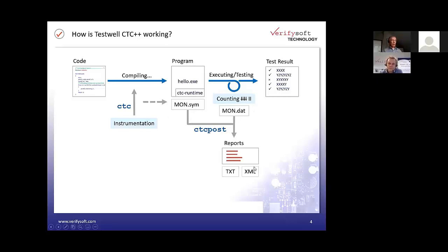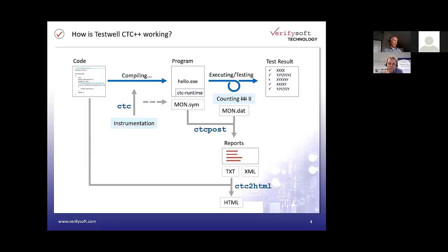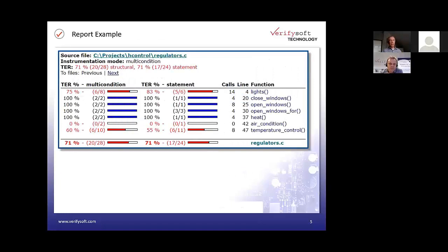The result can be an XML report, for instance, which you can process further — maybe displaying figures on a dashboard in your build system or CI pipeline. Or if you want to see whether you have enough tests for white box testing, we usually create an HTML report that combines test results with the original source code. In the next slide we see how this can look.